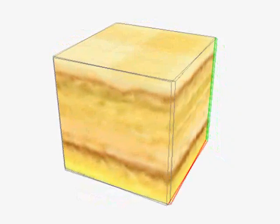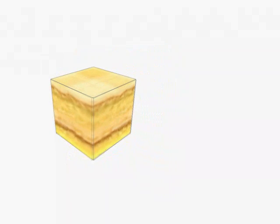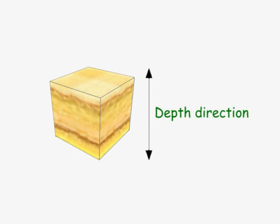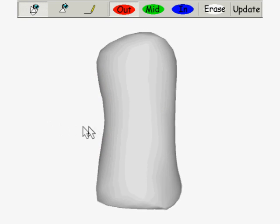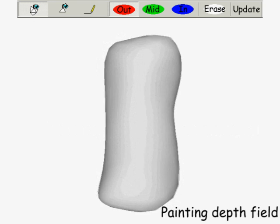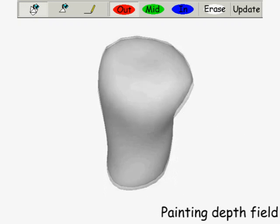This type of texture includes layered objects. Its appearance gradually changes along the depth direction. In this case, the user specifies depth field inside of the model by painting colors onto the model using three tools.